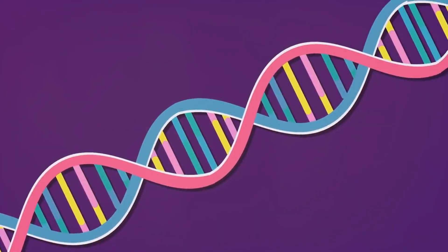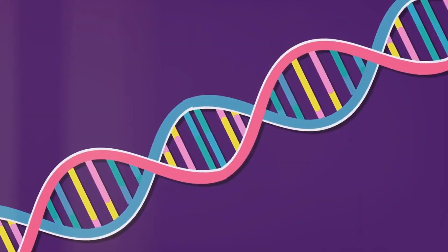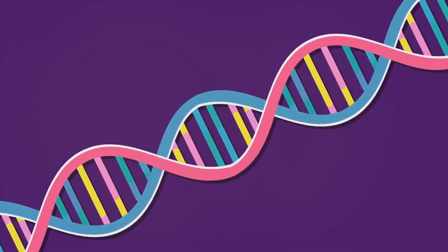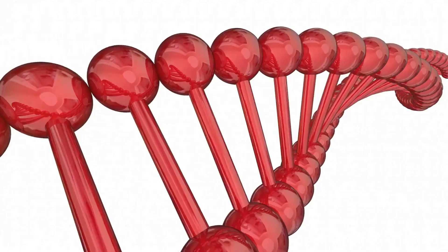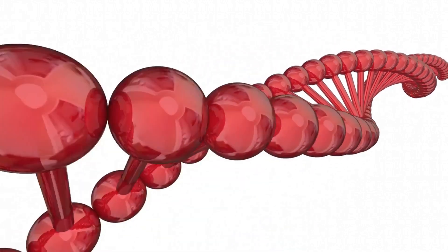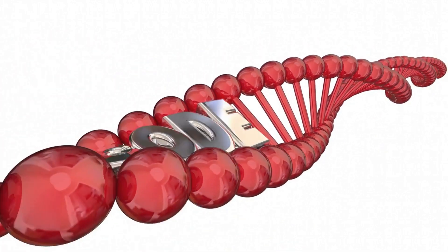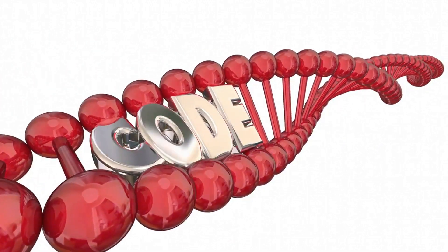Cystic fibrosis is an inherited disorder, meaning it's passed from parents to children through genes. Each of us has two copies of the cystic fibrosis transmembrane conductance regulator gene, or CFTR for short. If both copies of this gene are mutated, cystic fibrosis results.